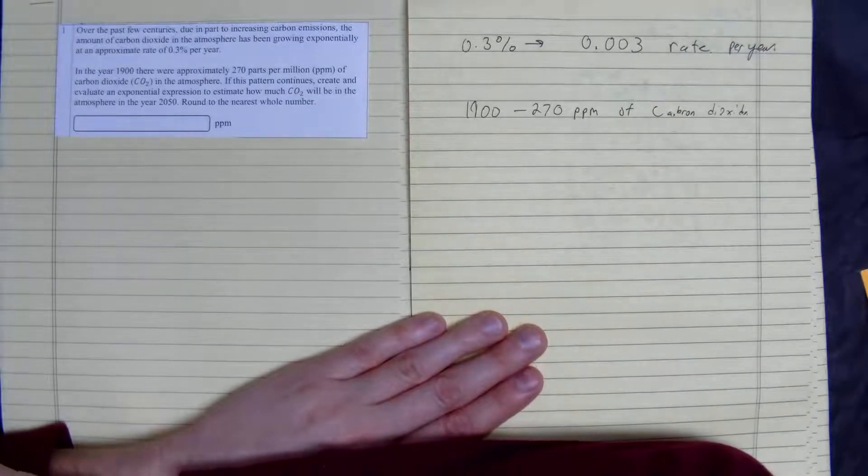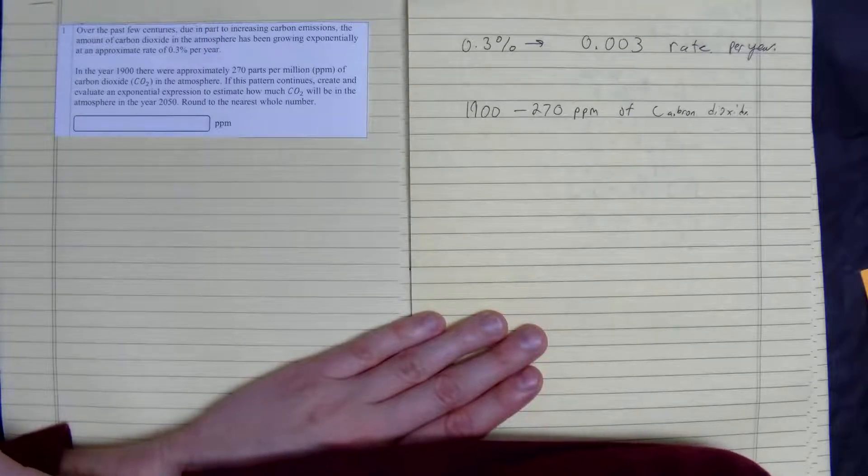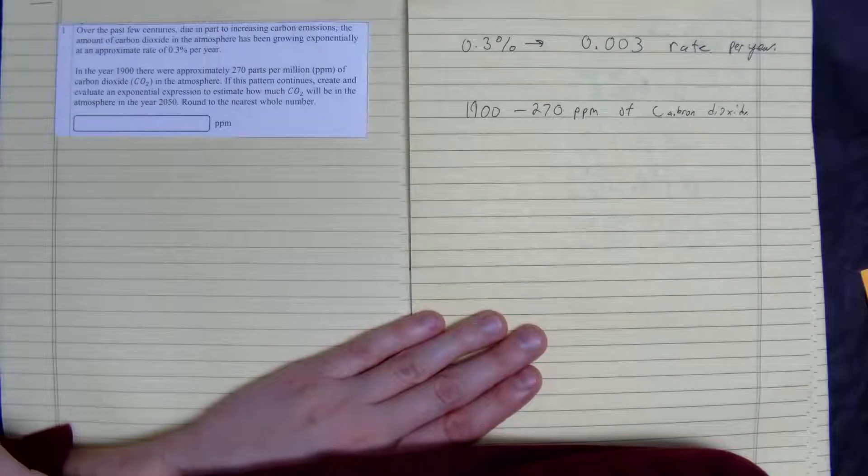If this pattern continues, create and evaluate the exponential expression to estimate how much CO2 will be in the atmosphere in the year 2050. Round to the nearest whole number.